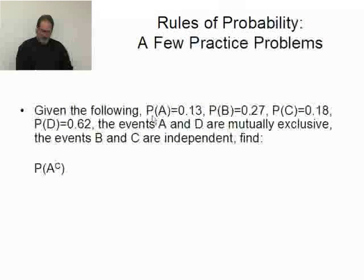So here we go. We have probability of A being given as 0.13, probability of B is 0.27, C is 0.18, and D is 0.62.